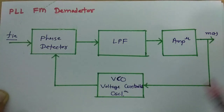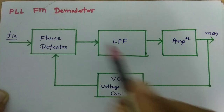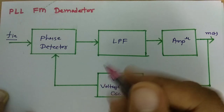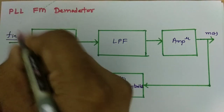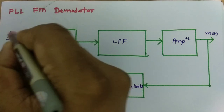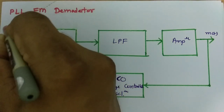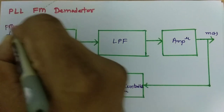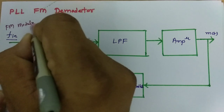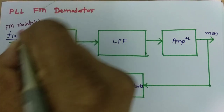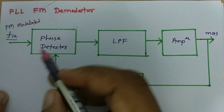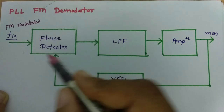This is the basic block diagram of PLL-FM Demodulator, where we are given an FM modulated signal at the input side, and that will be given to the phase detector.